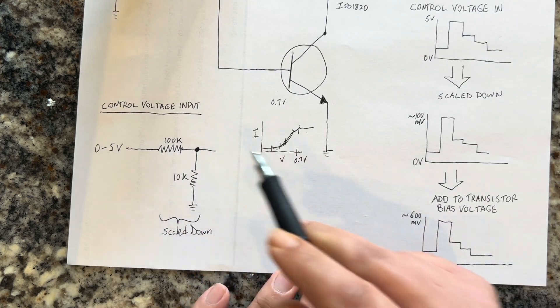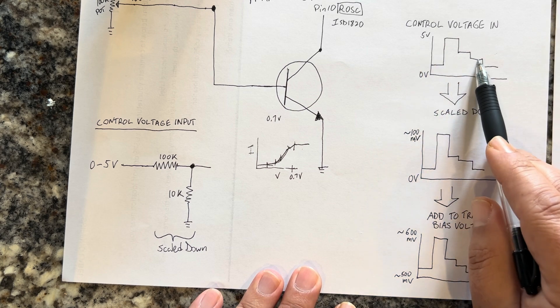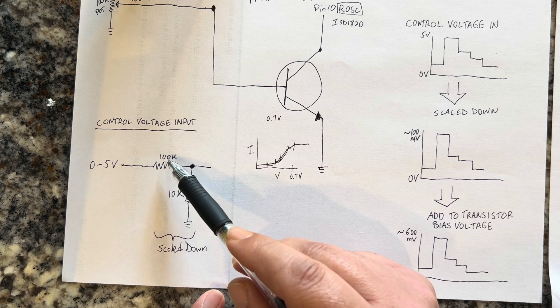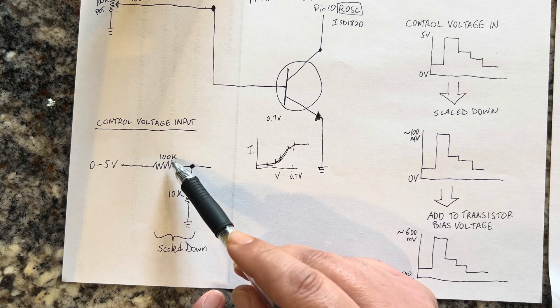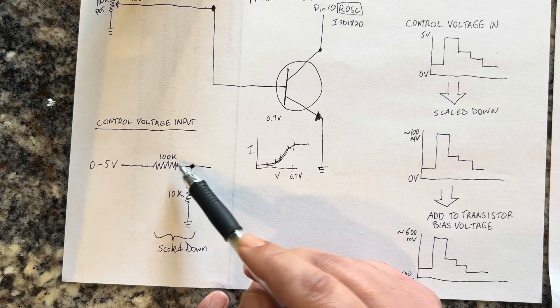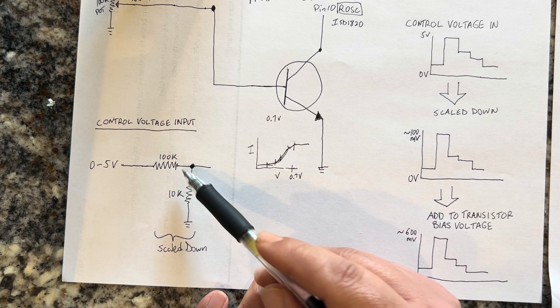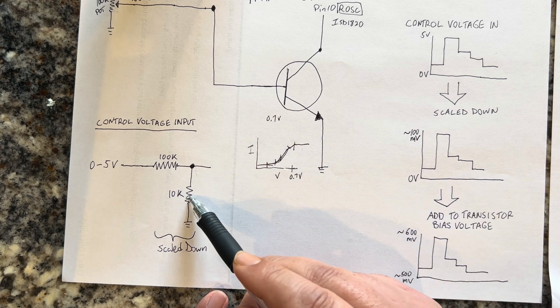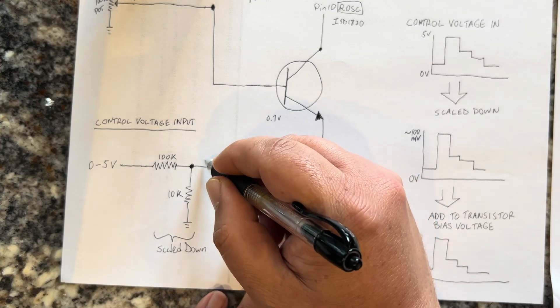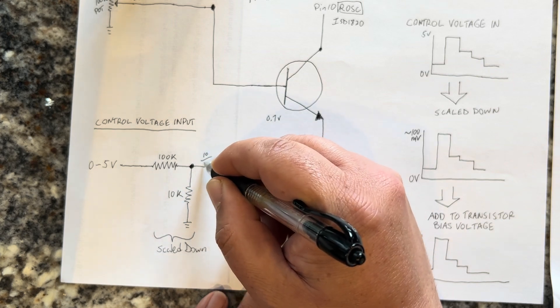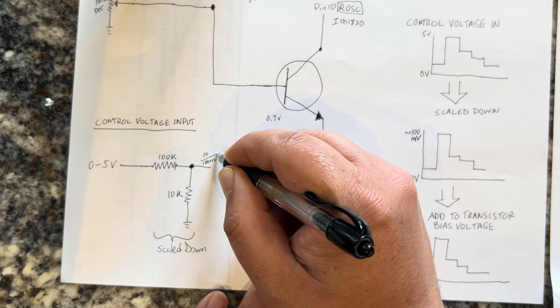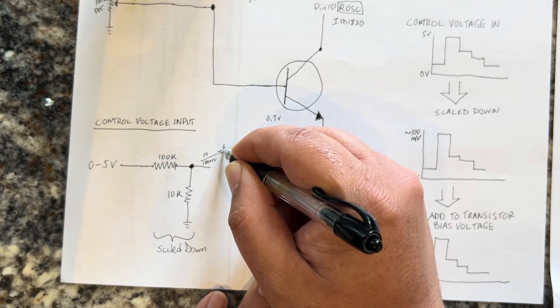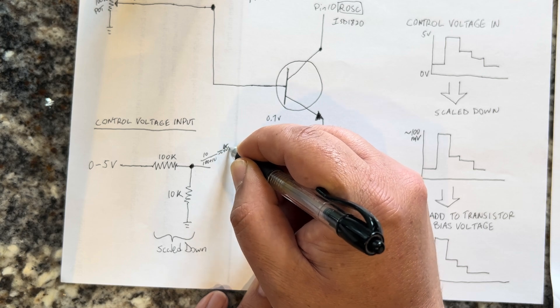You want your control voltage input, which is basically zero to five volts, and you want to scale it down. To scale it down, you put it through another voltage divider, which is a 100k resistor and a 10k resistor to ground. That way it's scaled down to about one tenth. The voltage here will be 10 over 100 plus 10, which is about equal to a tenth. It's 0.45 volts maximum.